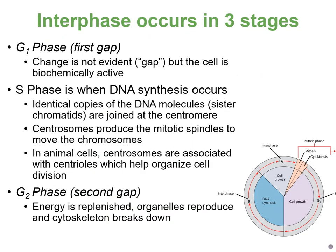Let's look at the subphases of interphase. G1, or gap 1, is when the cell is growing and getting ready to replicate DNA. Cell changes aren't really evident, but the cell is active and getting ready to replicate its chromosomes. S phase is when DNA synthesis occurs — that's where the S comes from — and this is when we make identical copies of the DNA in order to split them during mitosis.